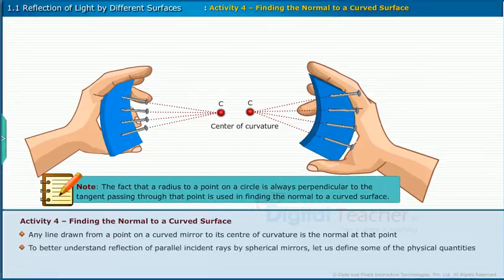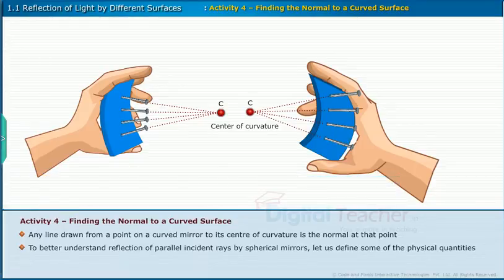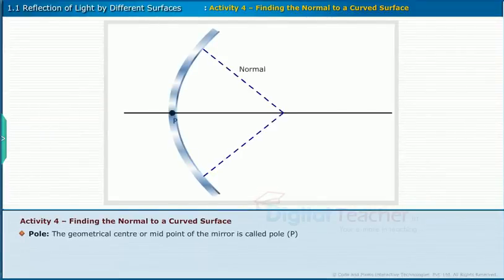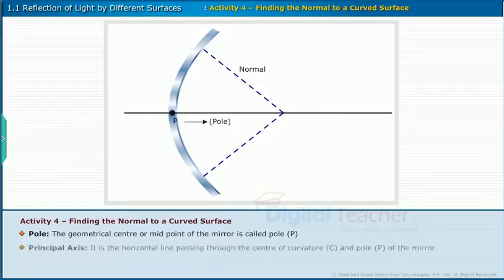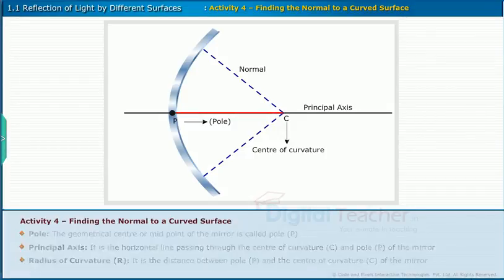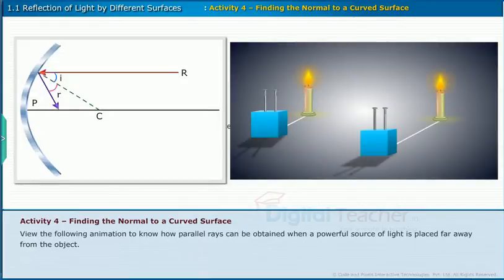To better understand reflection of parallel incident rays by spherical mirrors, let us define some physical quantities. Pole: the geometrical center or midpoint of the mirror is called pole P. Principal axis: it is the horizontal line passing through the center of curvature C and pole P of the mirror. Radius of curvature R: it is the distance between pole P and the center of curvature C of the mirror. View the following animation to know how parallel rays can be obtained when a powerful source of light is placed far away from the object.